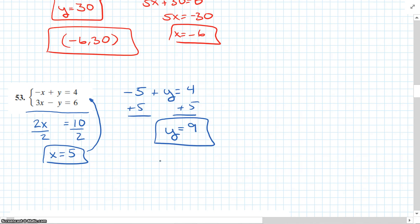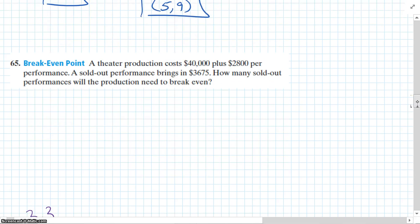So my ordered pair is x comma y, which would be (5, 9). Okay, moving on. Next equation.